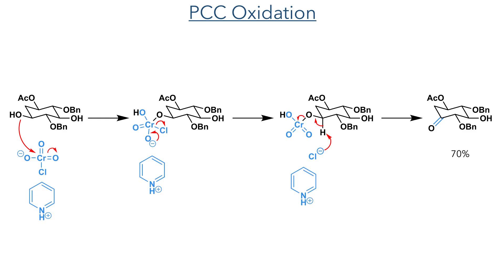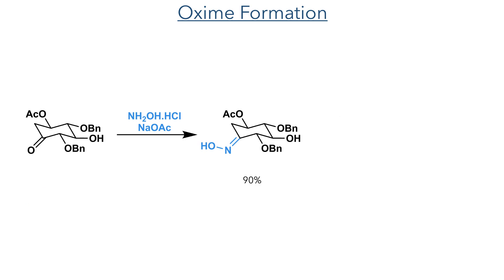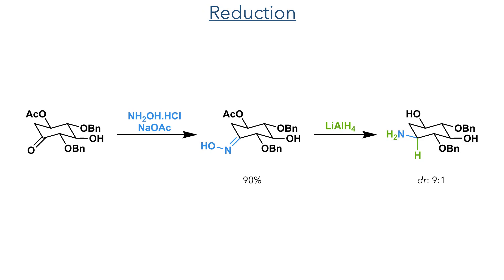Taking this compound forward, it was then oxidised using PCC. This was attacked by the less sterically hindered hydroxyl group, which adds to the chromium centre and then eliminates a chloride anion. This then acts as a base to complete the oxidation of the hydroxyl group to a ketone in a 70% yield. This ketone was then condensed with hydroxyl ammonium chloride forming the oxime in a 90% yield. This was then reduced with lithium aluminium hydride to form the primary amine with a 9:1 dr, selectively forming a product with the amine in the equatorial position, as this minimises 1,3-diaxial interactions.